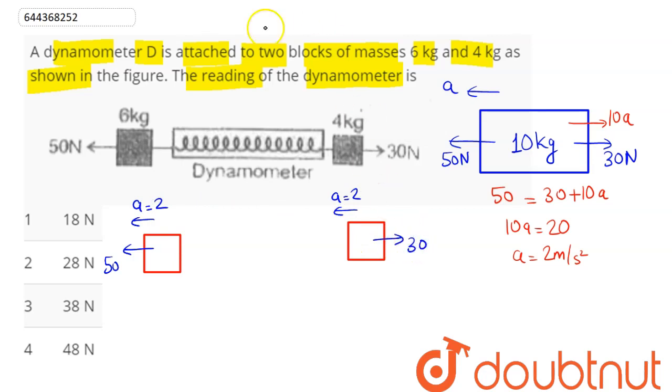Pseudo force on the 6 kg block will act to the right with magnitude 6 × 2 = 12 Newton. And the pseudo force on this 4 kg block will act towards the right, which is equal to 4 × 2 = 8 Newton. Hence, the spring force, which is the reading of the dynamometer, will be acting as shown.